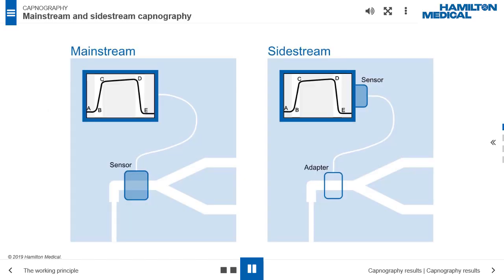Mainstream and sidestream capnography. Mainstream and sidestream capnography are two basic configurations of CO2 monitors. The main difference is the location where the respiratory CO2 is measured.